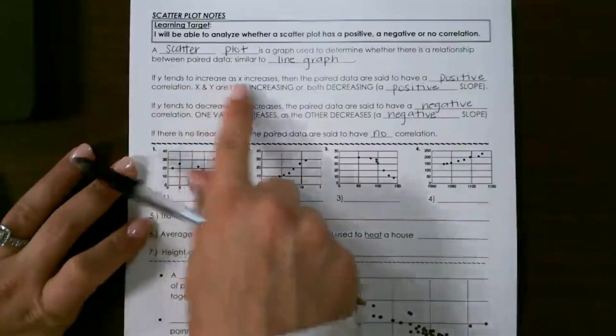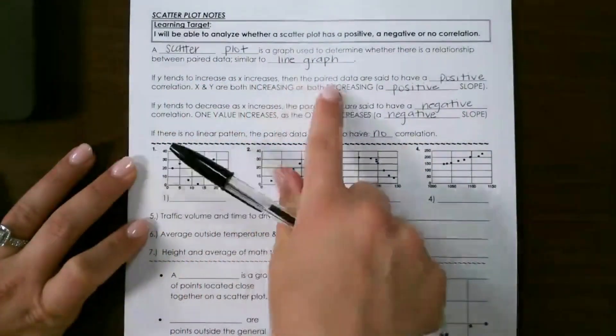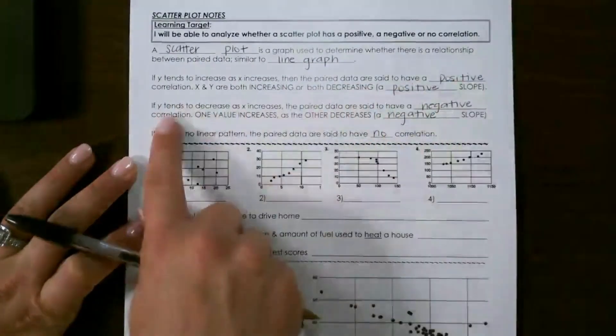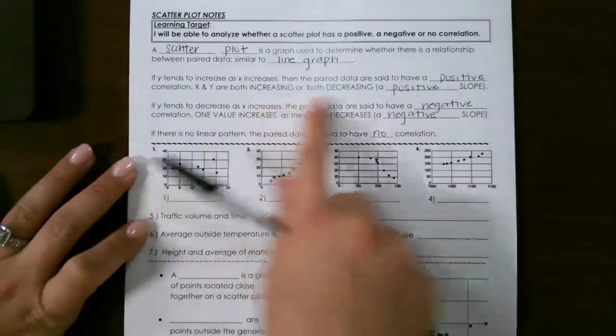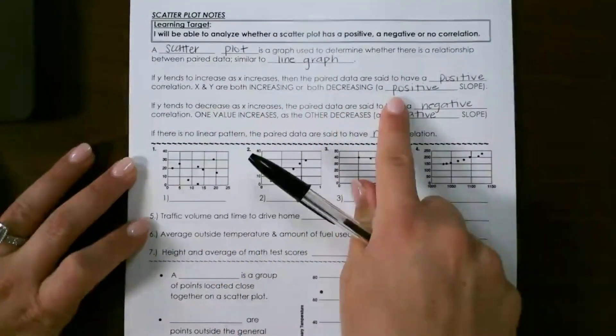If Y tends to increase as X increases, then the paired data are said to have a positive correlation. X and Y are both increasing or both decreasing, so they have a positive slope.